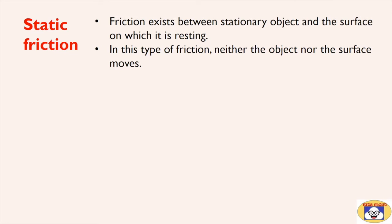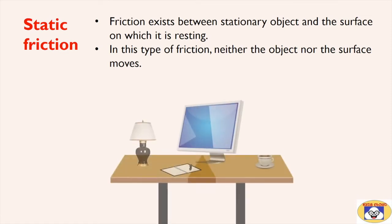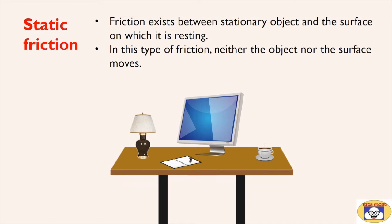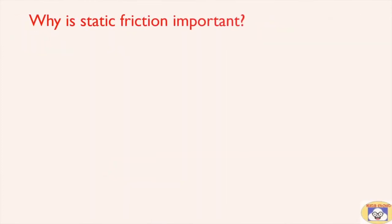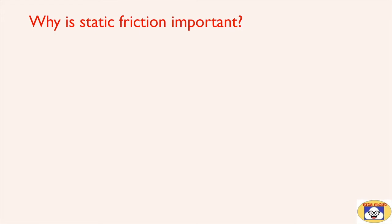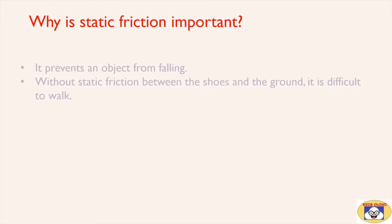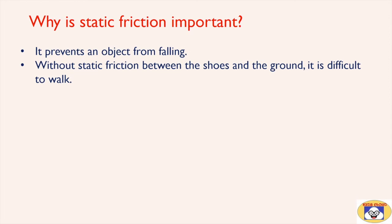In this type, neither the object nor the surface moves. Once the object starts moving, other types such as rolling or sliding take over. Anything such as a LED screen, table lamp, notebook, paint, or a cup of tea resting on the table is an example of static friction. Why is static friction important? It prevents an object from falling.